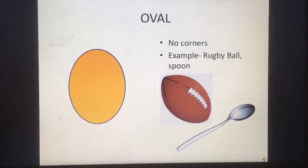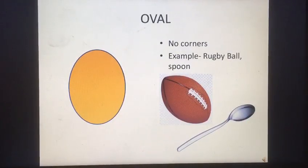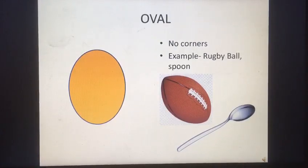Oval. It has no corners. Example: rugby ball and spoon.